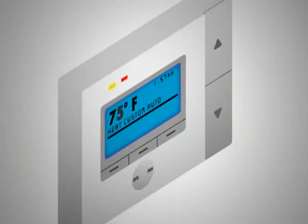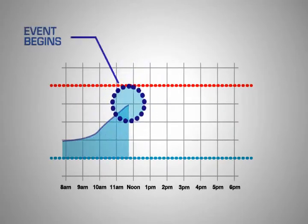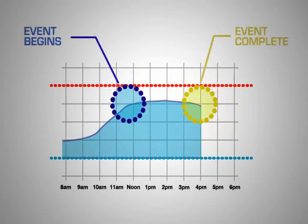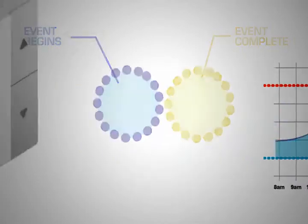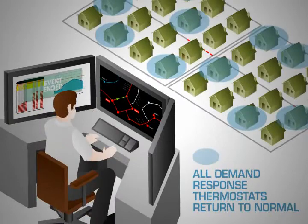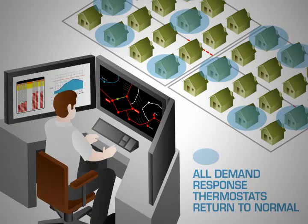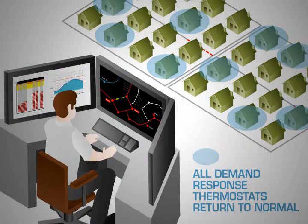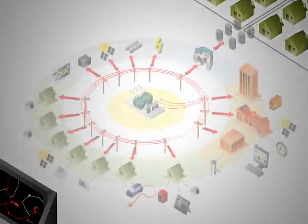The system operator monitors the grid and returns all of the MySmart thermostats to normal after the stressful situation has passed. By using smart grid technology and automating the response, the system can quickly respond to stressful situations on the grid, avoid an overload of equipment, and thus avoid the probable outage.